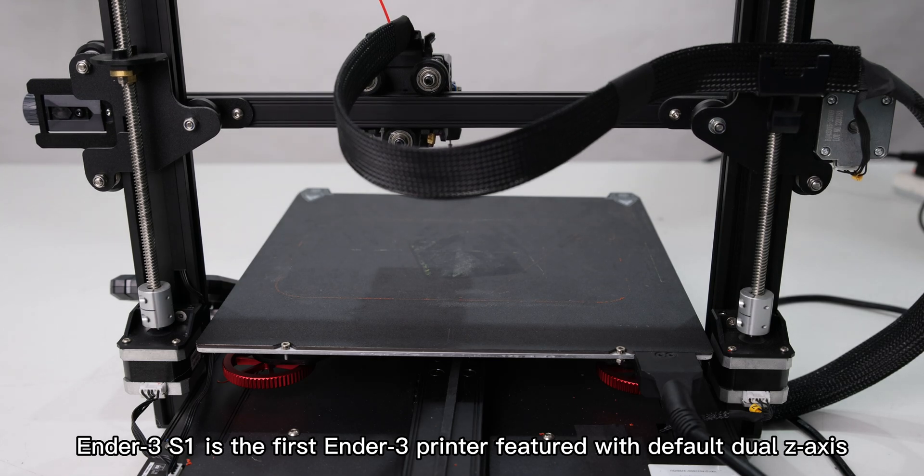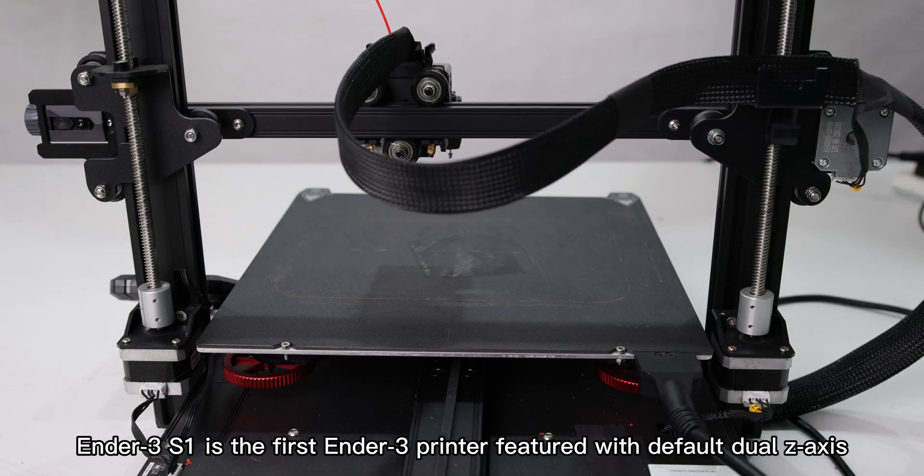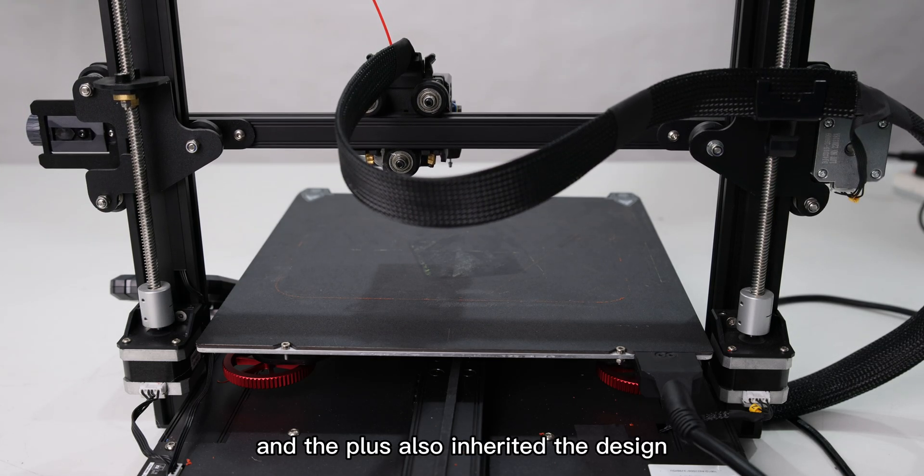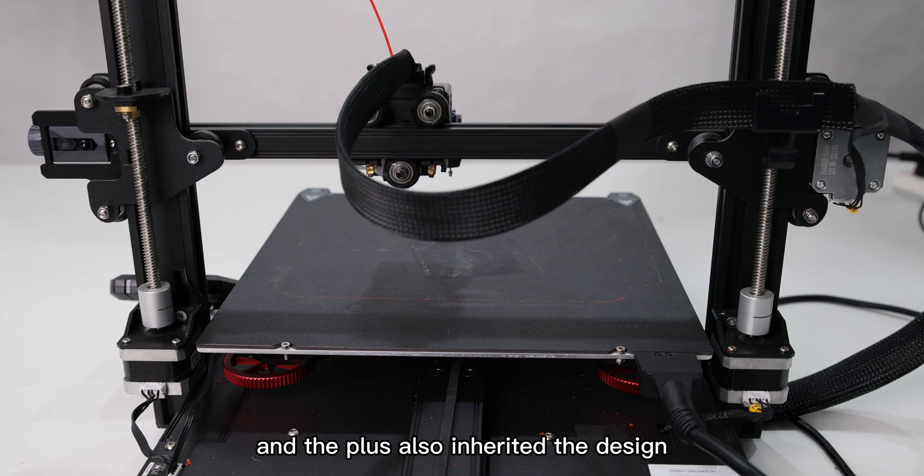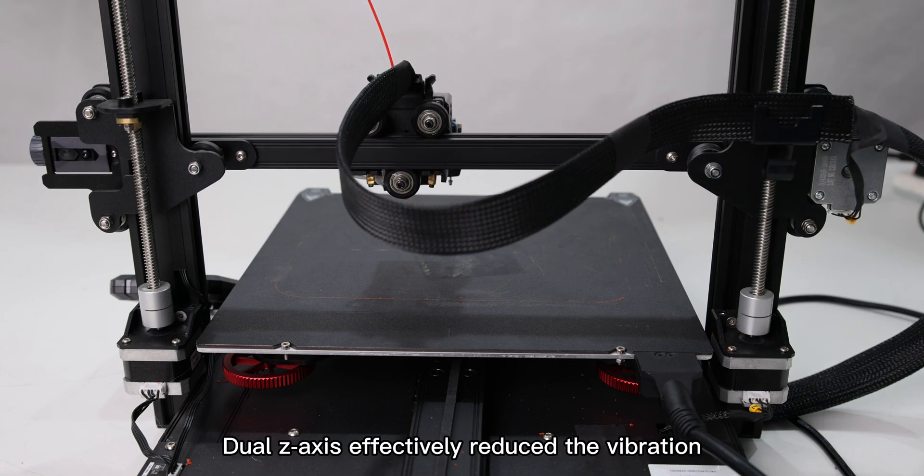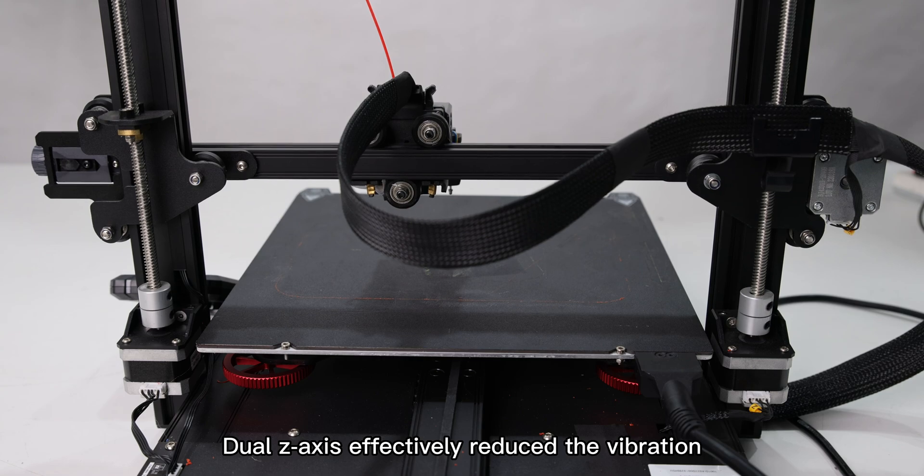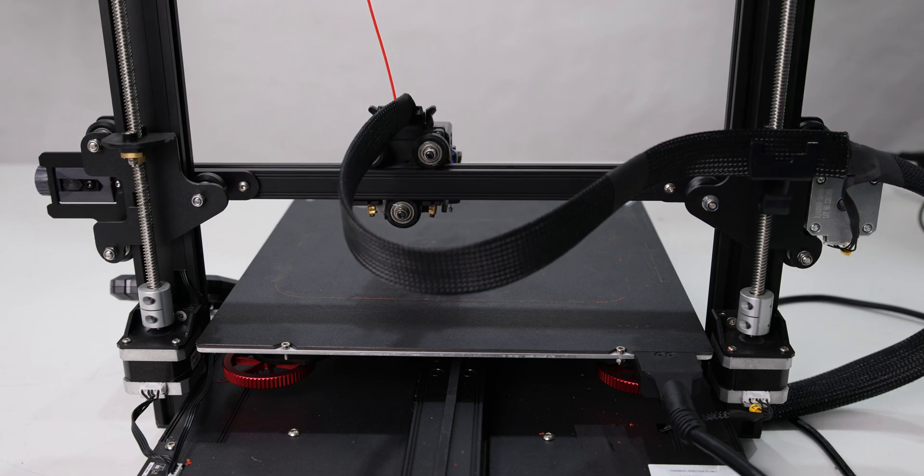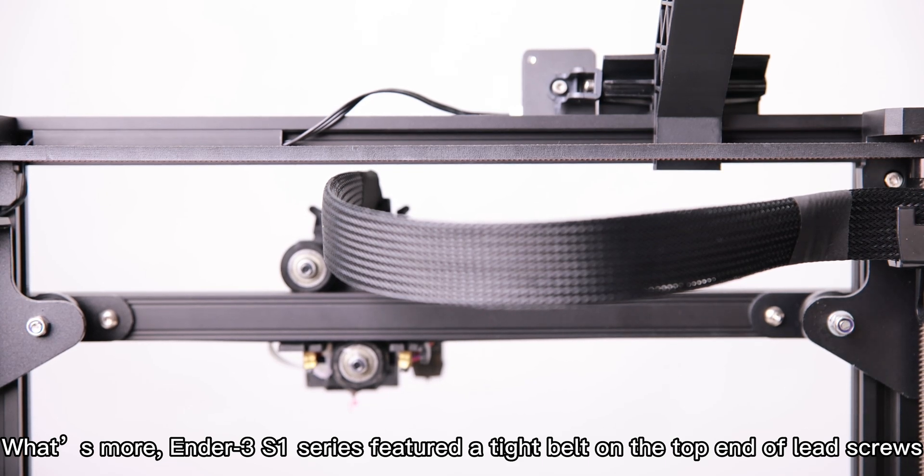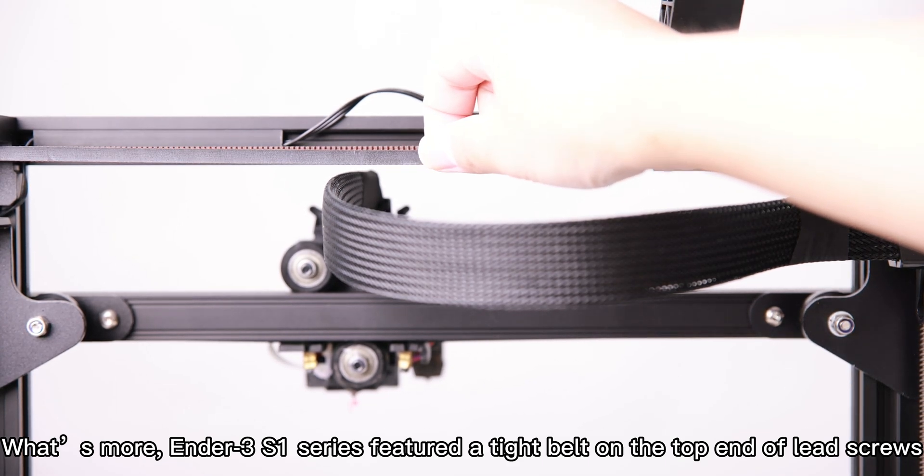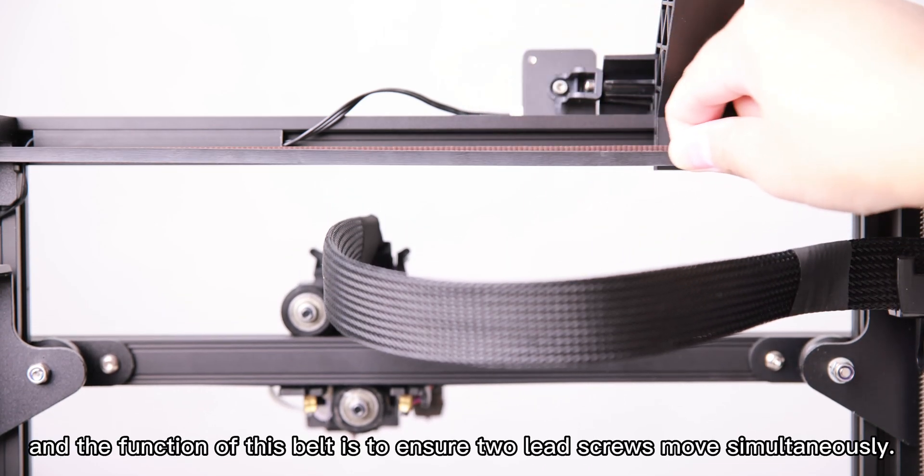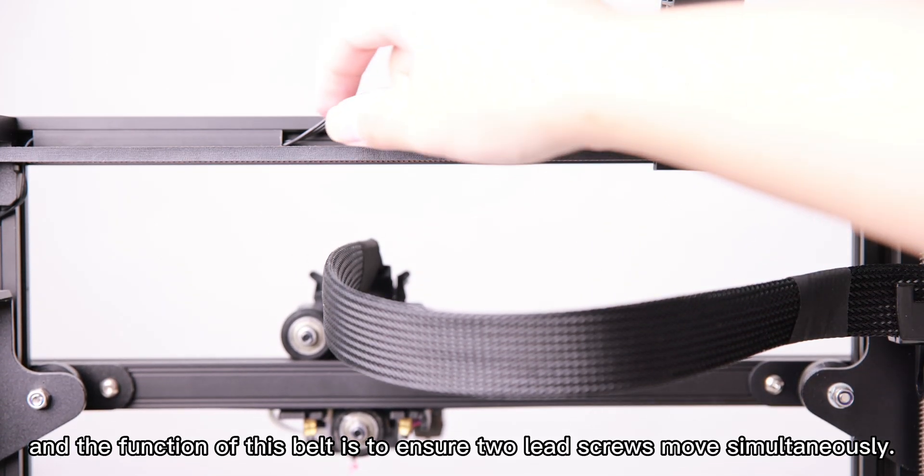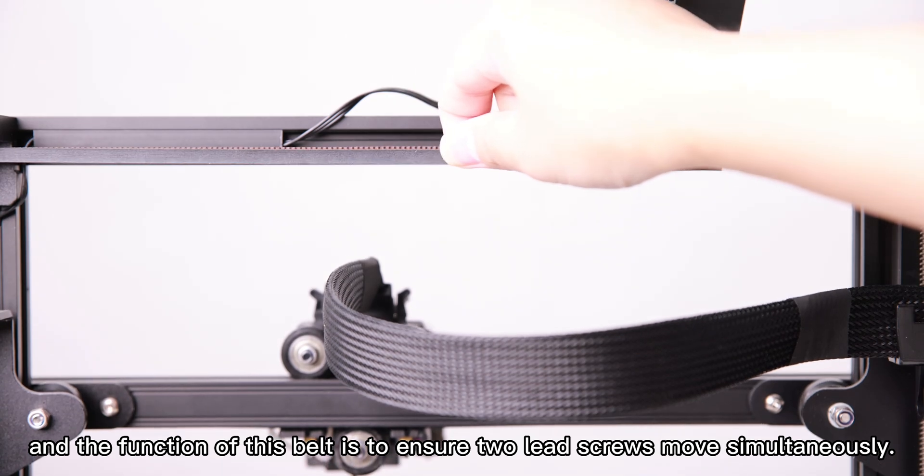Ender 3 S1 is the first Ender 3 printer featured with default dual Z-axis, and the Plus also inherited this design. Dual Z-axis effectively reduces the vibration which can lead to less layer shift. What's more, Ender 3 S1 series also features a timing belt on the top end of the lead screws, and the function of this belt is to ensure two lead screws move simultaneously.